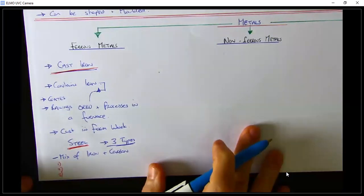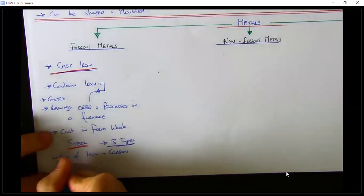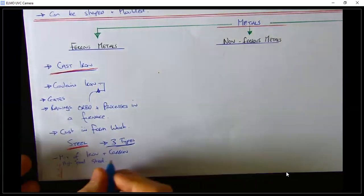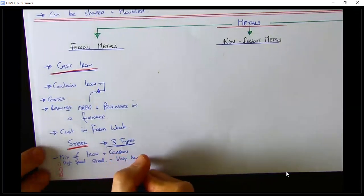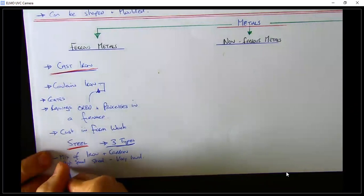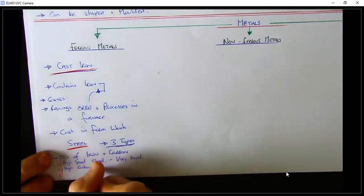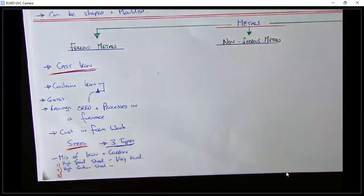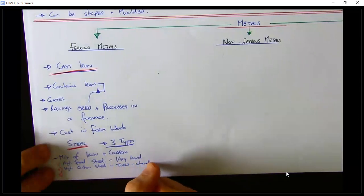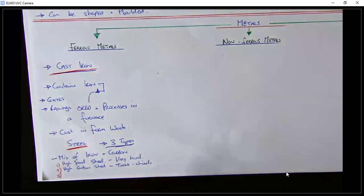The first type is high speed steel, which is very hard — that's the main property of that type. The second is high carbon steel, which is used a lot in tools. The chisels in the woodwork room are an example of high carbon steel — used in tools and can be resharpened and reshaped, which is why it's used in tools. The last one is stainless steel.